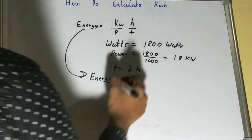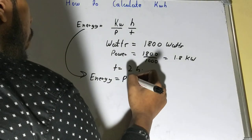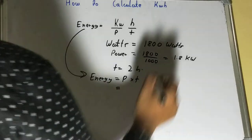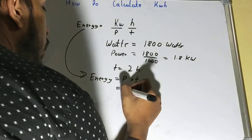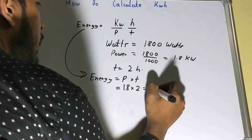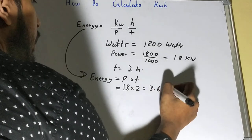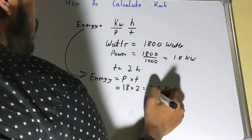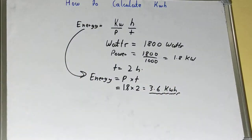So your energy will be basically power into time. So the power that is consumed by that particular appliance is 1.8 kilowatts, and the time is basically two hours. So we can say it will be 3.6 kilowatt-hour of energy used. So this is how you can calculate the kilowatt-hour.